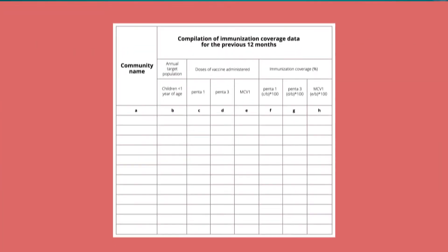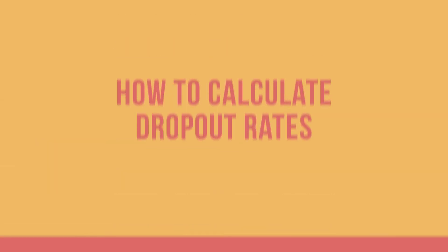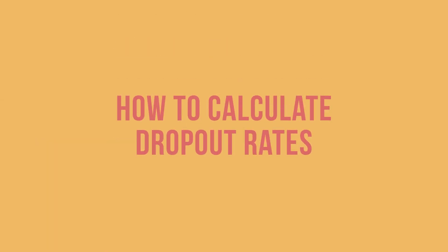You will probably be doing this calculation for several different vaccine types and vaccine doses, so you may want to use a simple chart to keep track of it all. Now let us look at how to calculate the dropout rate between the first and last dose of the same vaccine series.